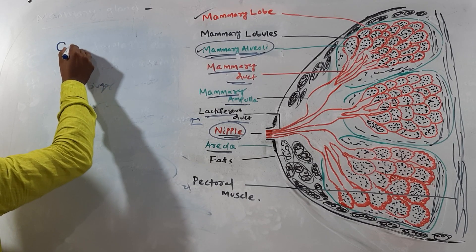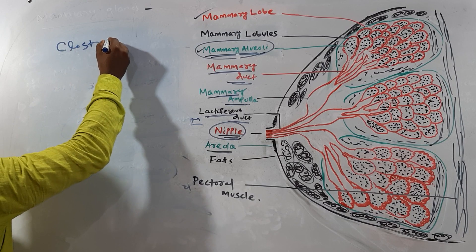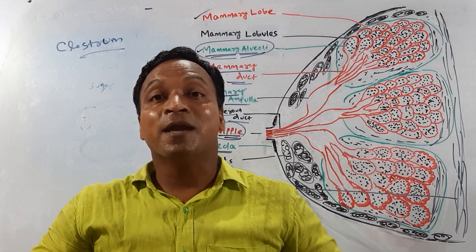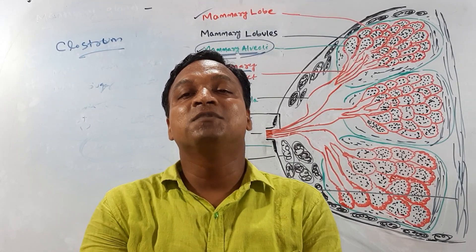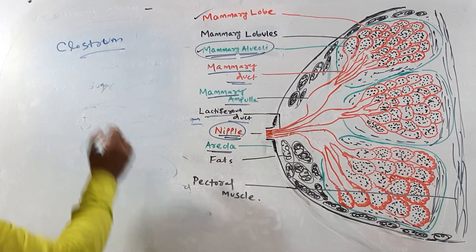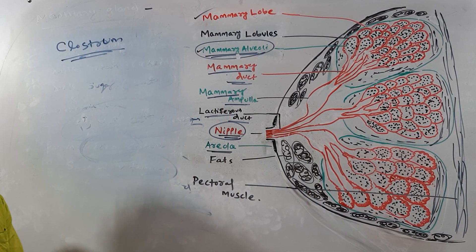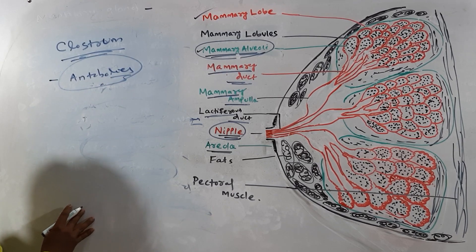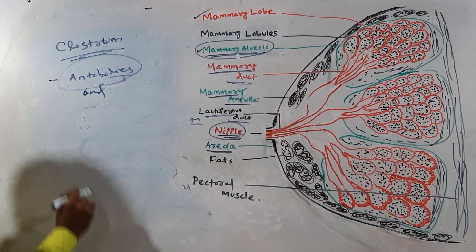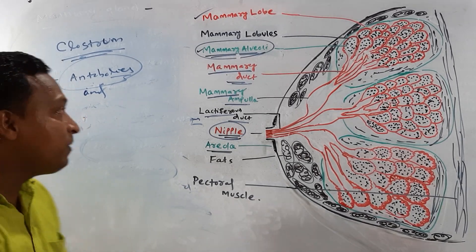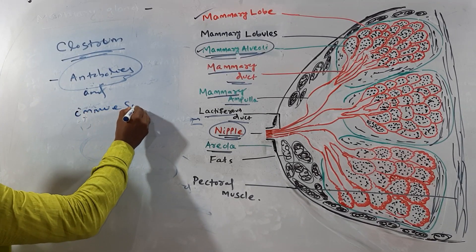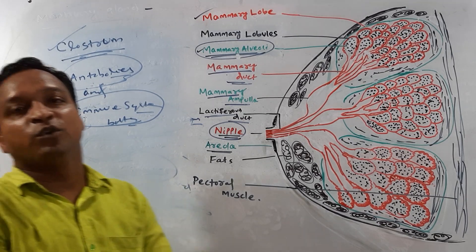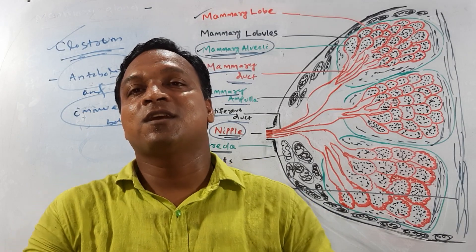The first milk of the mother is called colostrum. It is rich in antibodies and is very much required for the baby to develop its immune system. The colostrum is an immune system booster for the human baby.